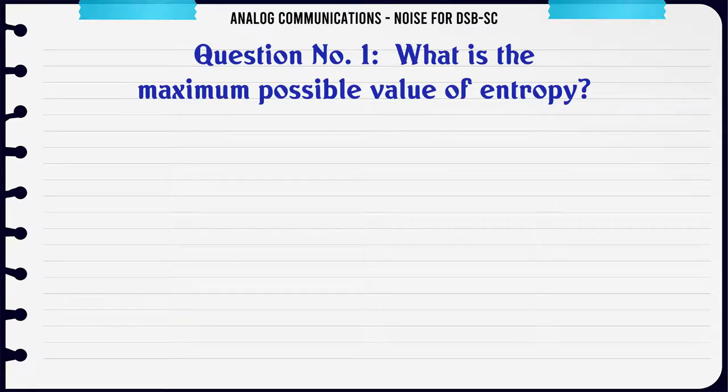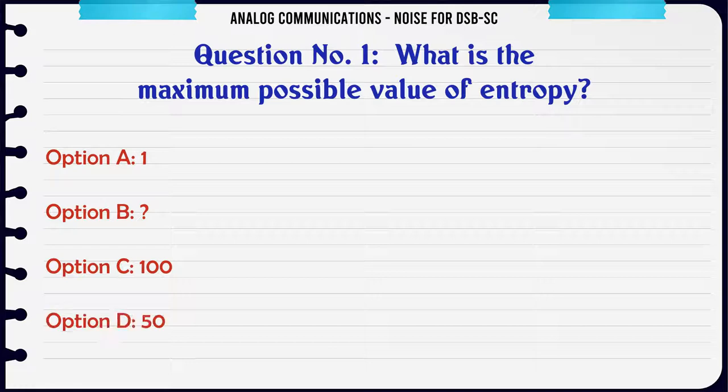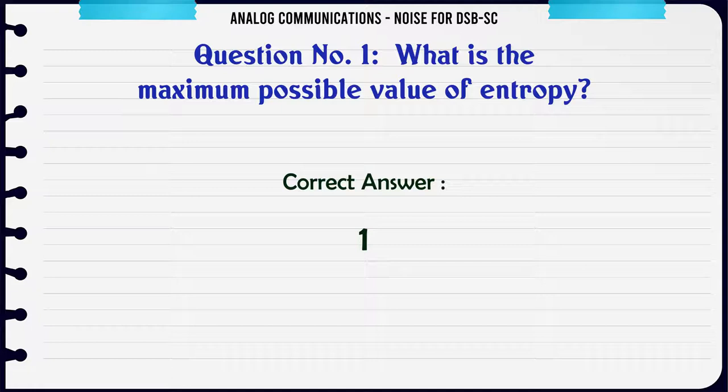What is the maximum possible value of entropy? Option A: 1. Option B: 0. Option C: 100. Option D: 50. The correct answer is 1.